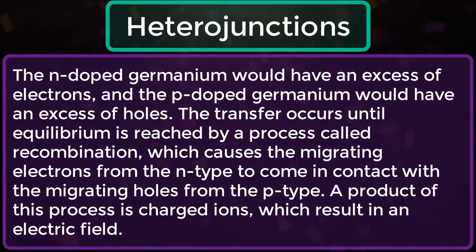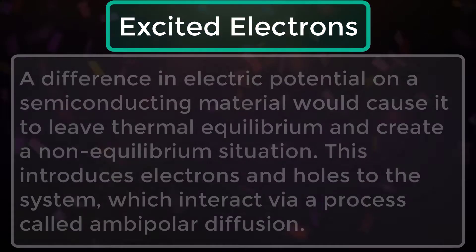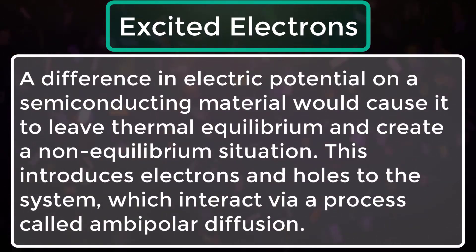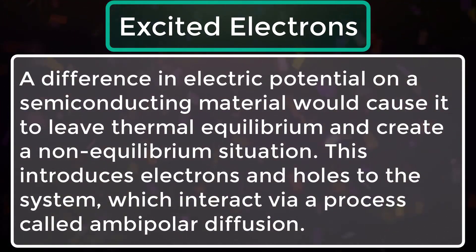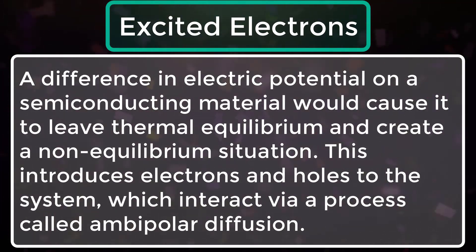A product of this process is charged ions, which result in an electric field. A difference in electrical potential on a semiconducting material would cause it to leave thermal equilibrium and create a non-equilibrium situation. This introduces electrons and holes to the system, which interact via a process called ambipolar diffusion.